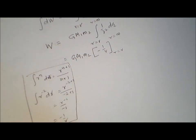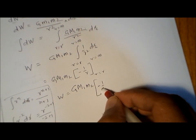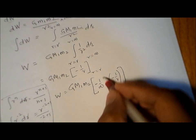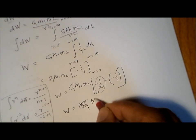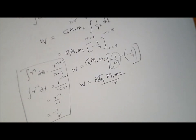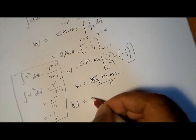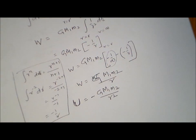So the work done equals G m1 m2 times the result evaluated from r to infinity. When r equals infinity, the term is minus 1 over infinity, which is 0. When r equals r, the term is minus 1 over r. The minus and minus become plus, so work done equals G m1 m2 divided by r. Since gravitational potential energy is the negative of the work done in bringing the mass from infinity, the gravitational potential energy is minus G m1 m2 divided by r.